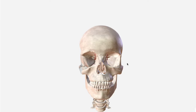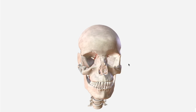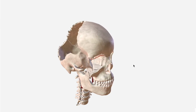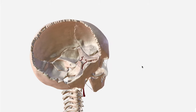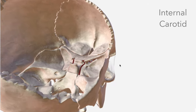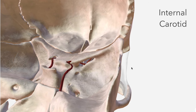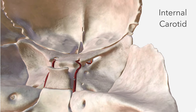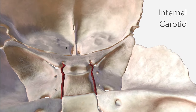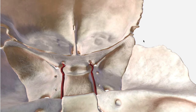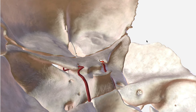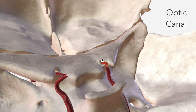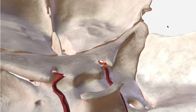In this video we're going to talk about the ophthalmic artery, which departs from the internal carotid just lateral to the hypophysial fossa. The ophthalmic artery immediately traverses through the optic canal in the sphenoid bone, accompanying the optic nerve along that path.